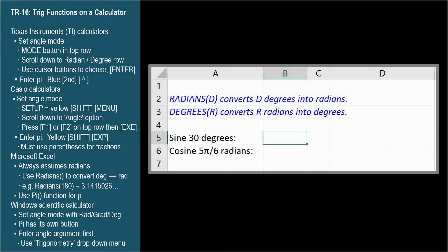So, to find sine 30 degrees, type equals, sine, open parenthesis, radians, open parenthesis, 30, close parenthesis, close parenthesis, enter, and we get our expected answer, 0.5.